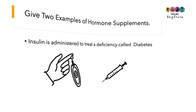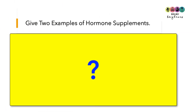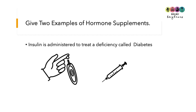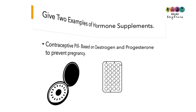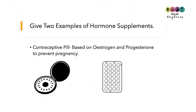This is negative feedback. The last question: give two examples of hormone supplements. It's not enough just to state insulin — you must say it's administered to treat a deficiency when the pancreas does not produce enough or any insulin. The patient is given insulin injections to treat diabetes. The second example is the contraceptive pill, which contains estrogen and progesterone — the two female hormones — and is used to prevent pregnancy.